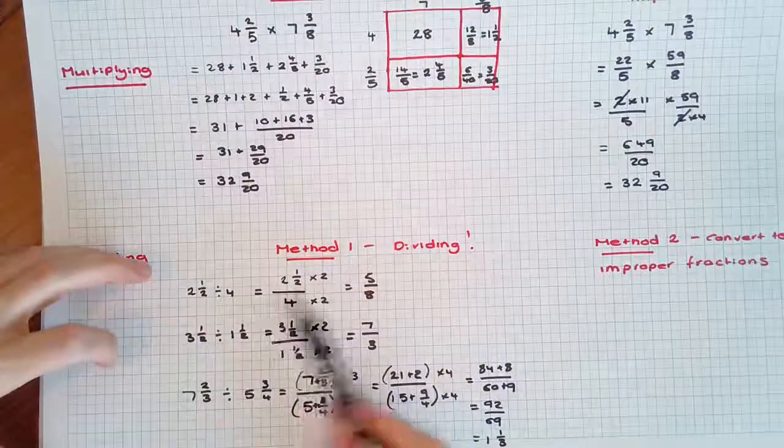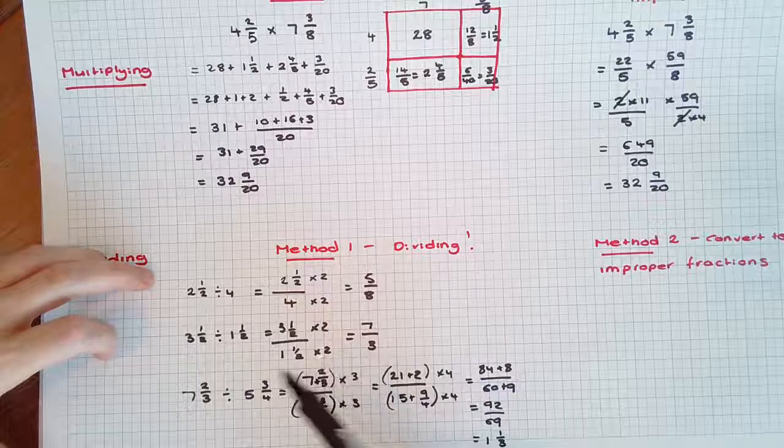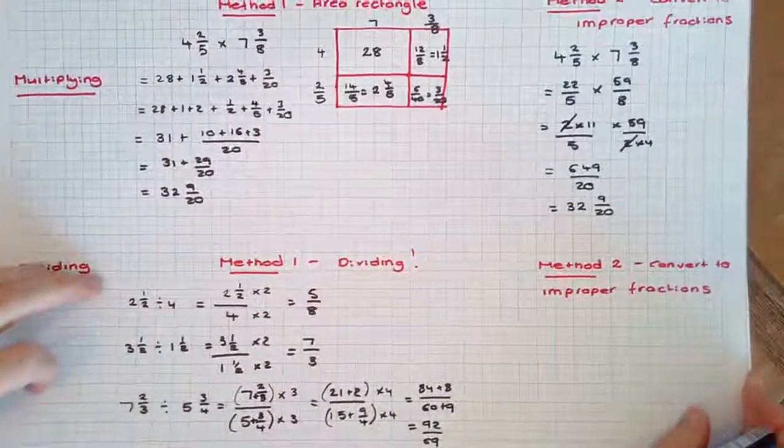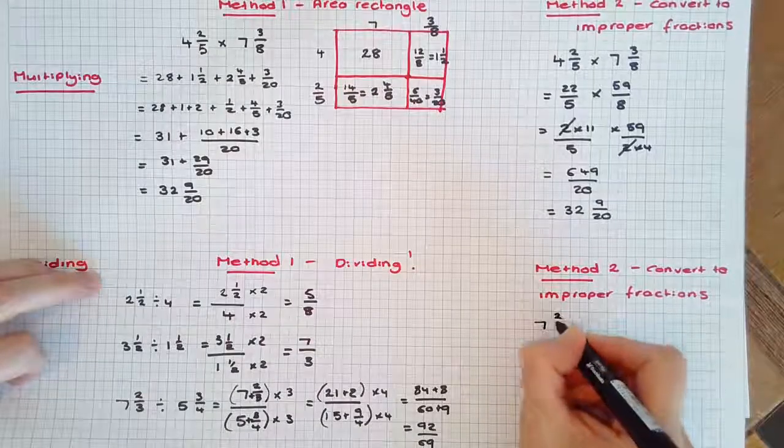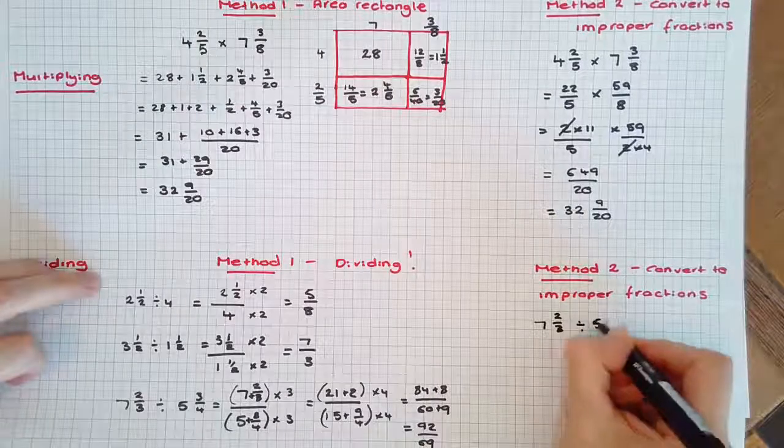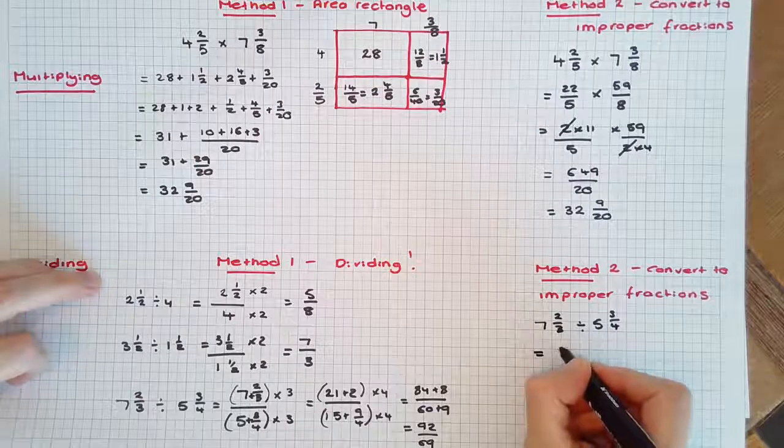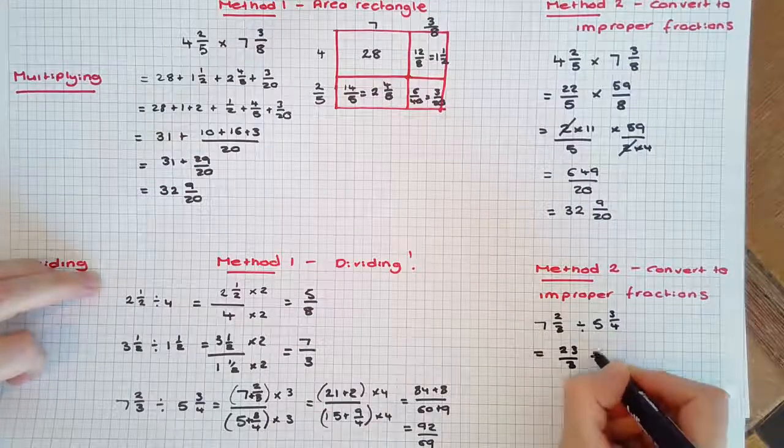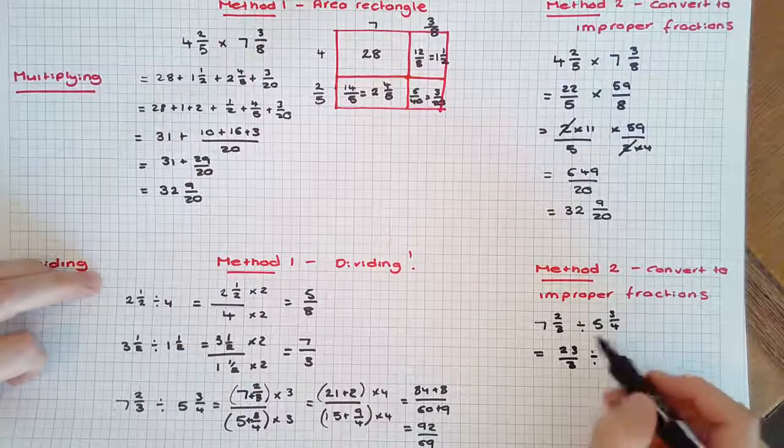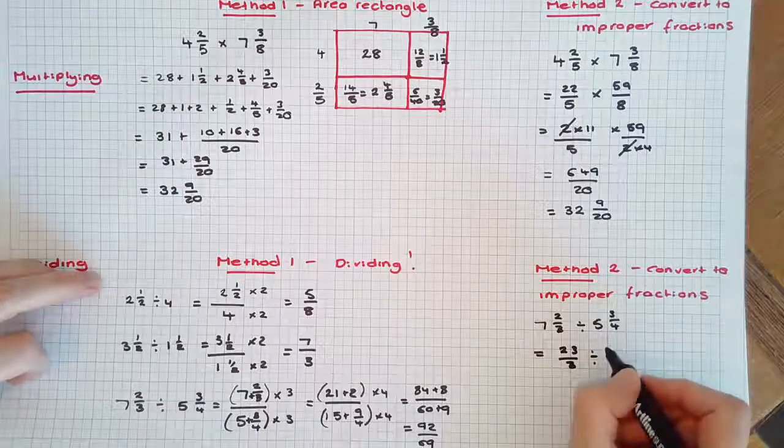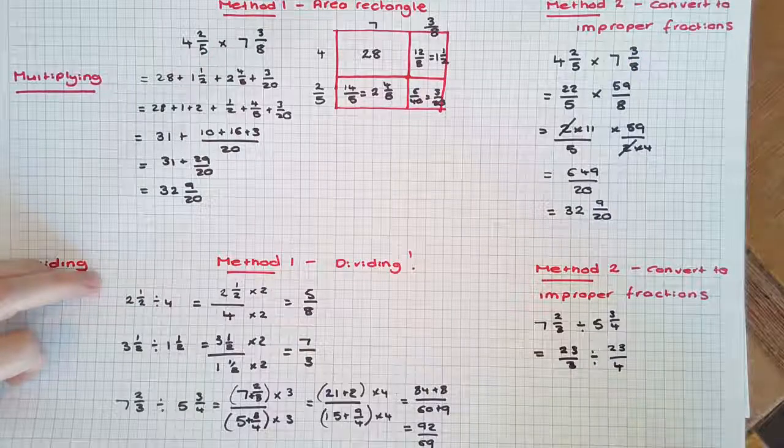So the option then would be to convert to improper fractions. Let's take this last problem and see how it looks if we just convert it to an improper fraction first: 7 2/3 divided by 5 3/4. As improper fractions, it would then become 23/3 divided by 23/4. Now we can work here with normal division. We could multiply